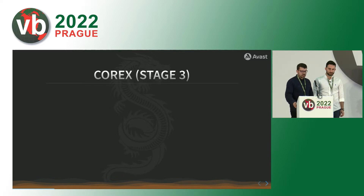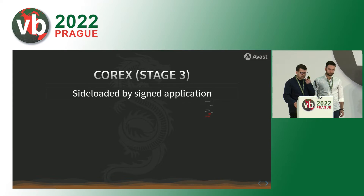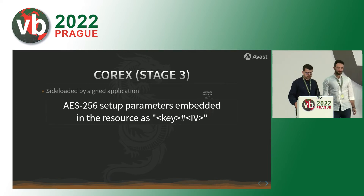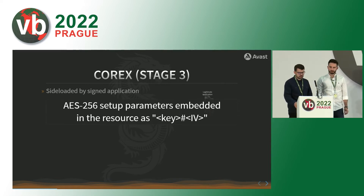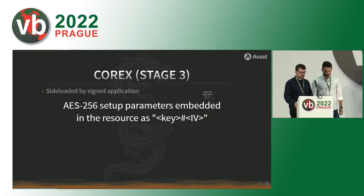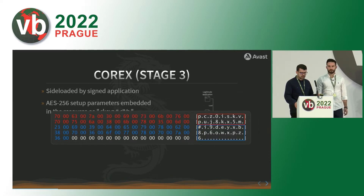We are going to start with stage three, which is the log DLL we call CoreX. As mentioned, they used side-loading. The payloads are encrypted and stored in resources with AES-256. The decryption parameters are also stored in the resource as key, hash, and IV as a wide string.